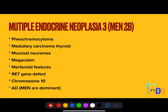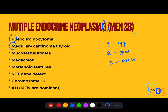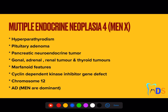The next type is MEN Type 3, also called MEN 2B. The code for Type 1 is PPP, for Type 2 it is PPM, whereas for Type 3 the code is PMM — P for pheochromocytoma, M for medullary carcinoma of thyroid (also present in 2A), and the remaining features include megacolon or Marfanoid features. Similarly, it involves the RET gene on chromosome number 10, and is autosomal dominant.